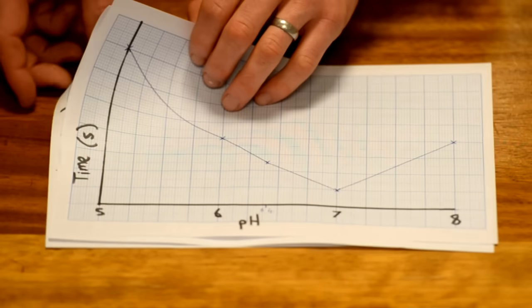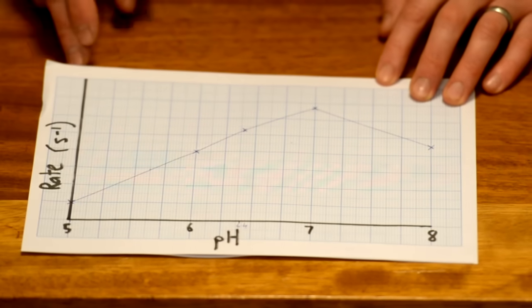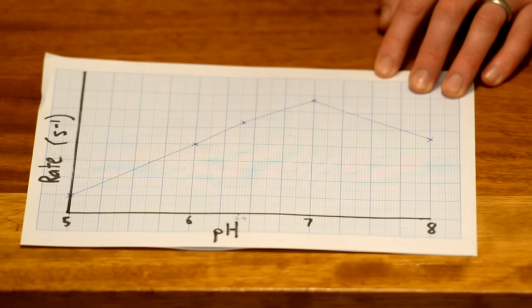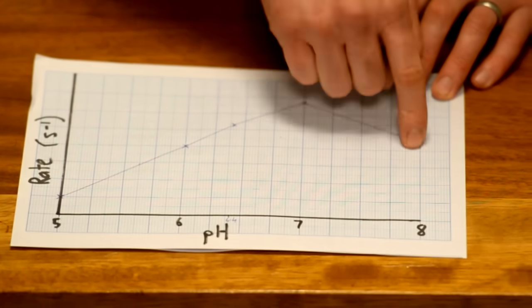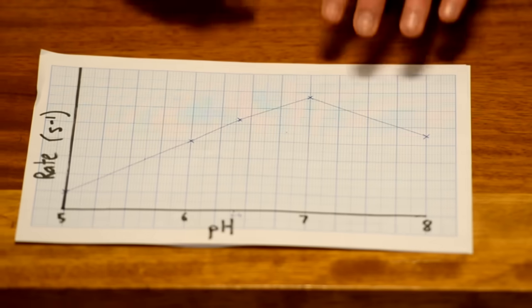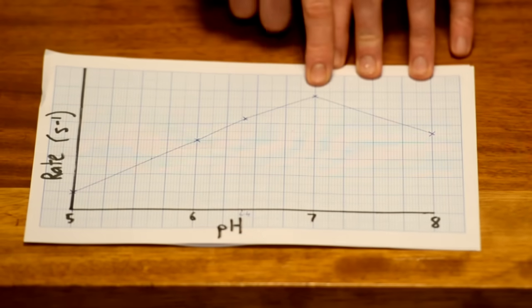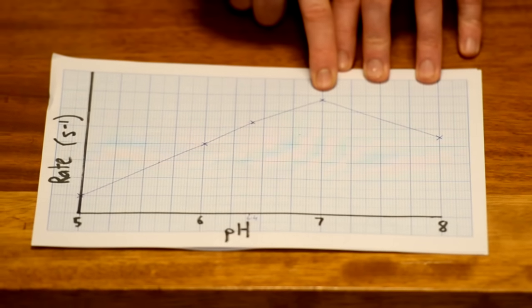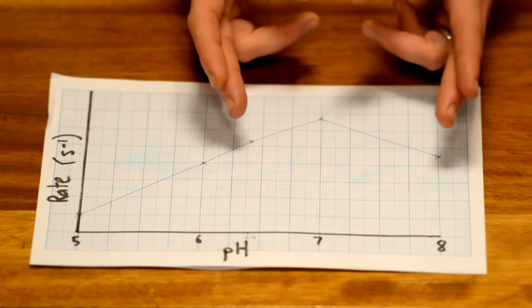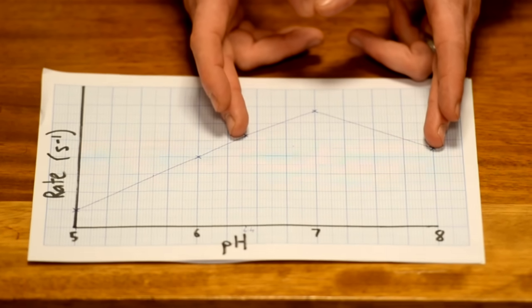You could also plot the rate of reaction against the pH of the solution which would show the inverse relationship showing that the fastest rate of reaction occurred at pH 7. But again we wouldn't know exactly where the optimum is in that range.